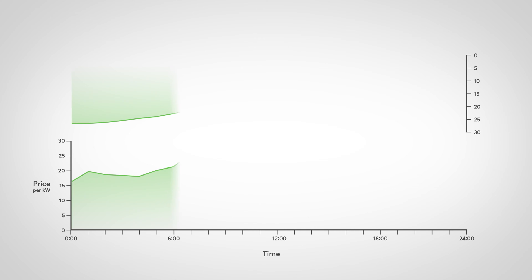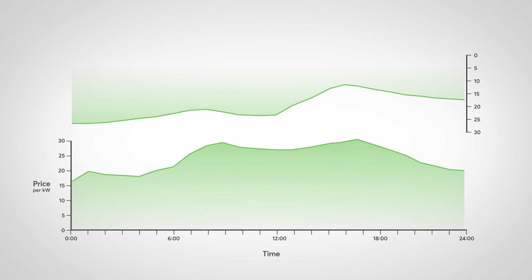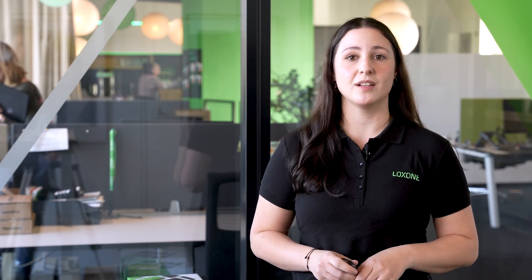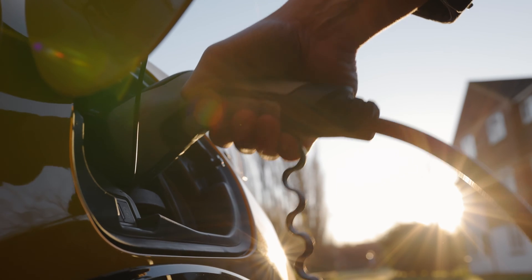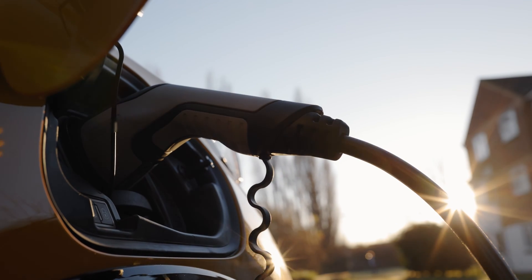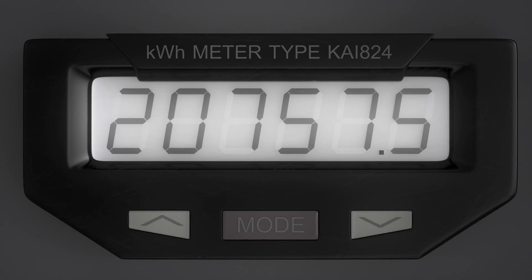However, why are prices particularly low? With a variable tariff, the price is determined depending on the demand and need. If the electricity supply is higher than the demand, the price could technically even go negative. But who actually benefits from dynamic electricity prices? In a nutshell, everyone who is flexible enough to use energy when it's cheapest. This way, electricity costs can be reduced massively.